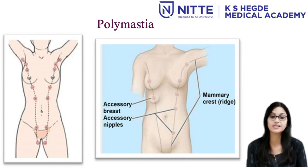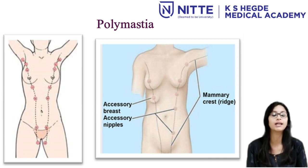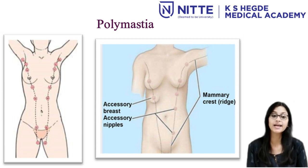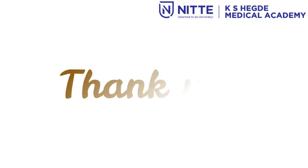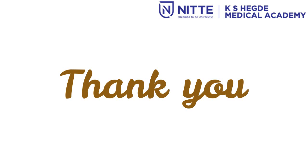Polythelia refers to supernumerary nipples, which may be found irregularly over the breast and not necessarily along the milk ridges. Polymastia — poly meaning many — refers to accessory breasts, which may occur along the milk ridge. On rare occasions, they may be functional.